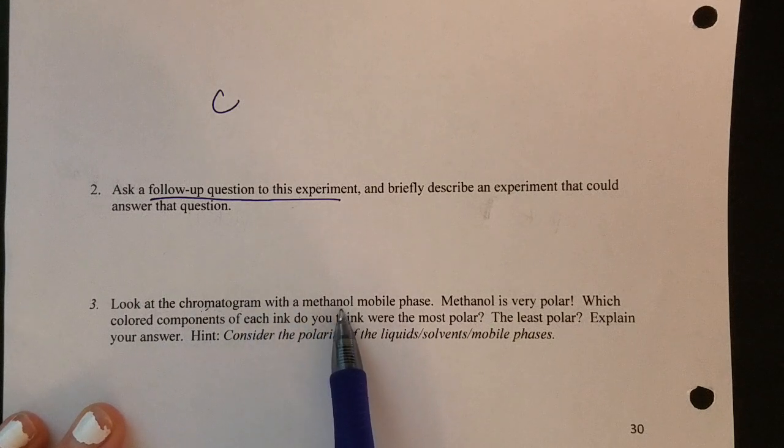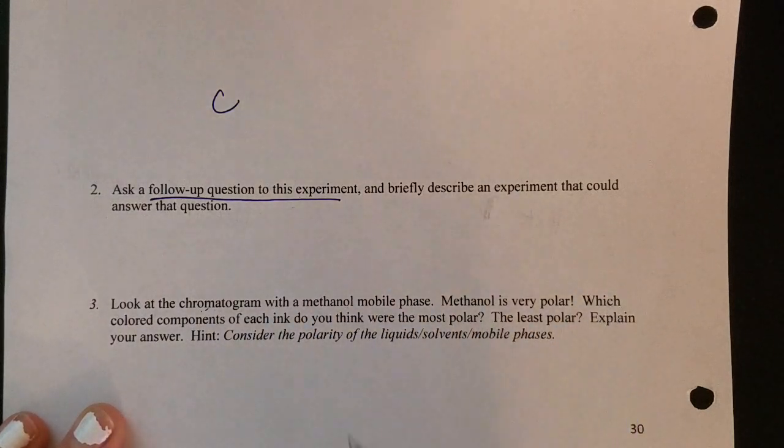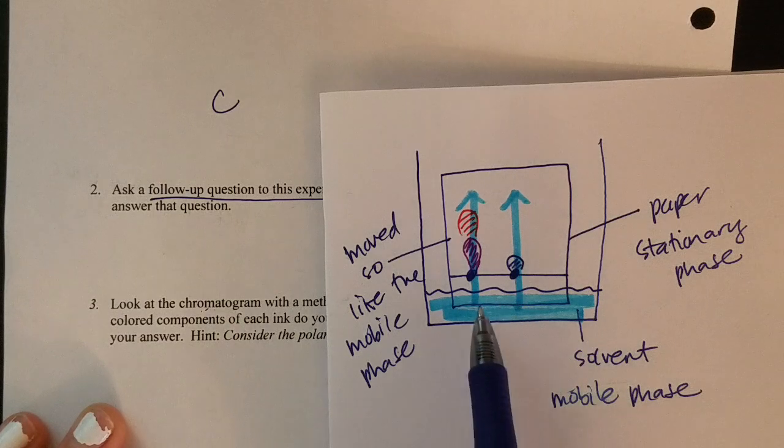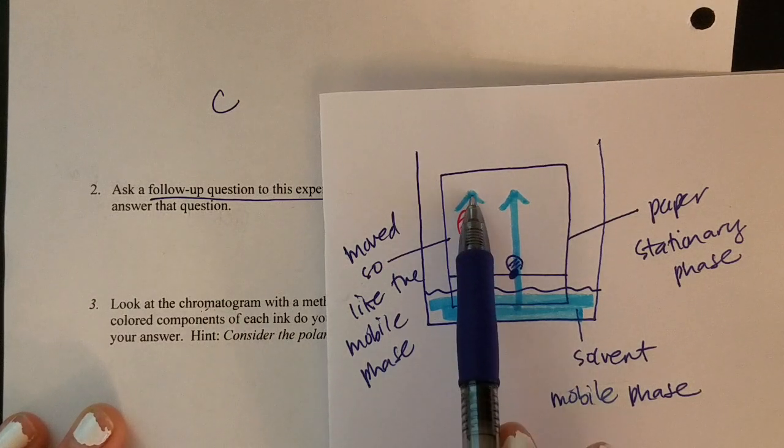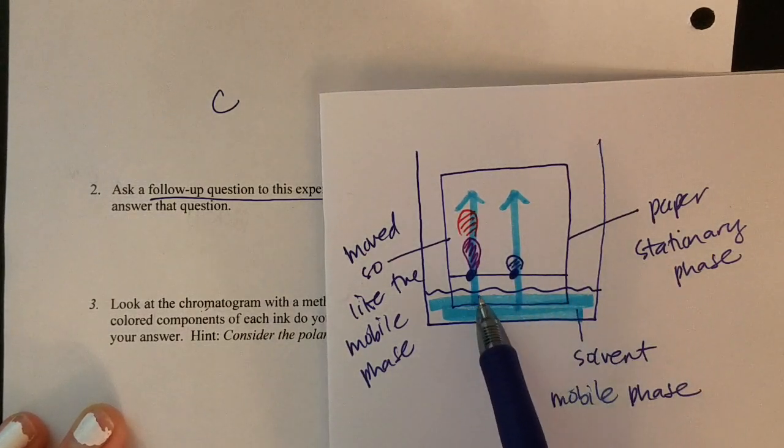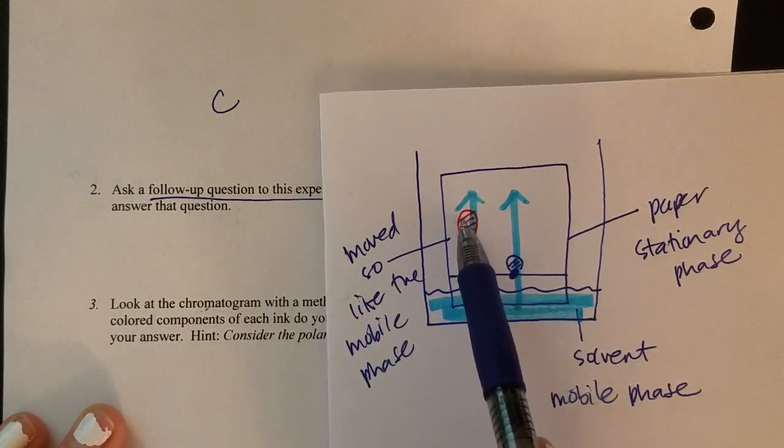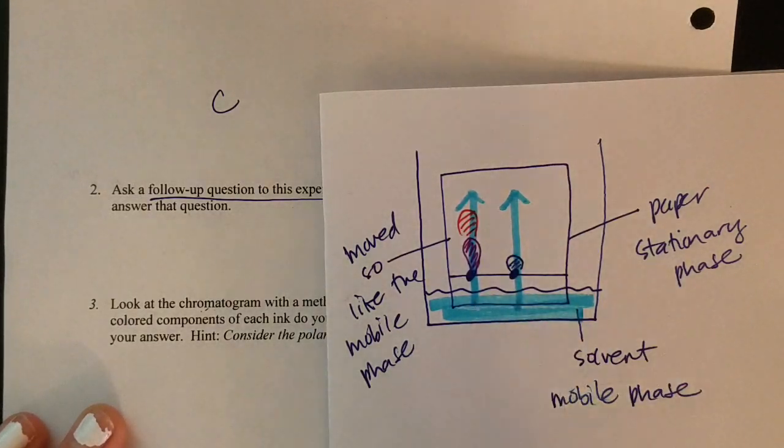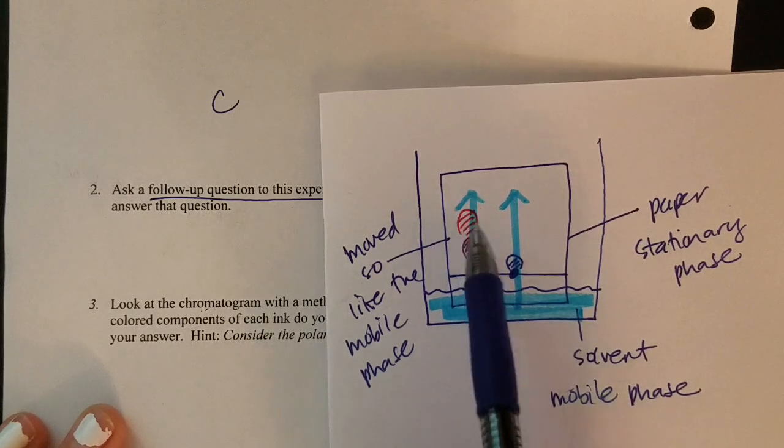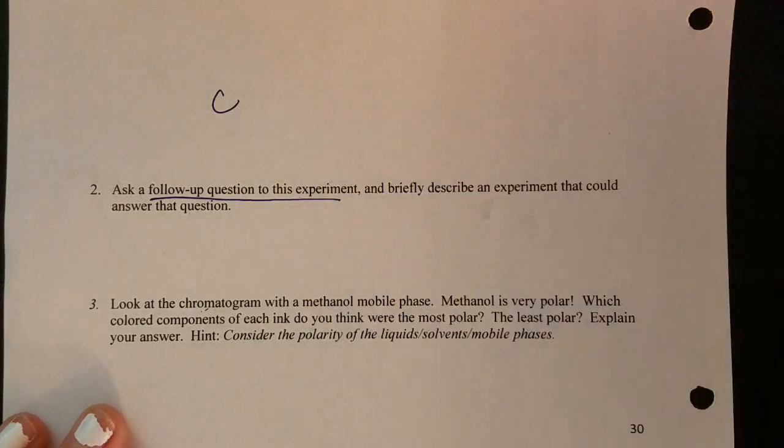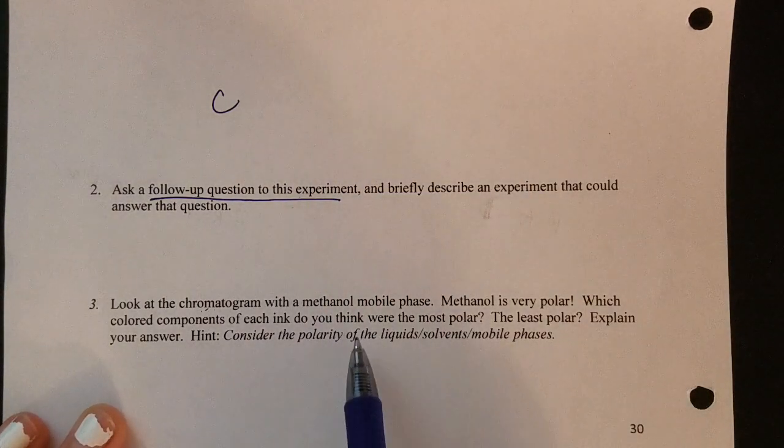And then lastly, you're going to look at the chromatogram with the methanol mobile phase. And you're going to answer which of the colored components of each ink you think were most polar. So that would be coming back to a picture like this. If my blue solvent is polar, then whatever moves furthest with it would be most polar. So I would say for this ink that the red component is more like the mobile phase than the purple component. So say this blue was methanol, I would say the red is more like methanol than the purple. So you want to have that kind of mindset as you work on number three here.